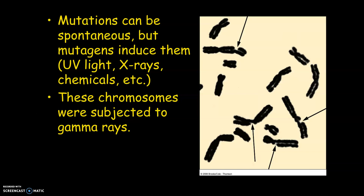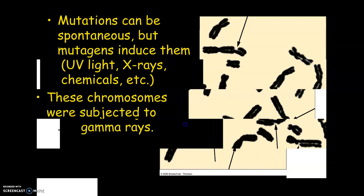This picture shows some of the damage done by gamma rays on chromosomes. Lots of things damage chromosomes — UV light, X-rays, different kinds of chemicals. But a lot of times it's just a random mutation that has nothing to do with anything you've been exposed to.